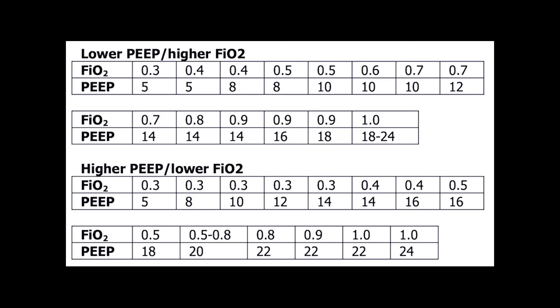If you look at the PEEP scale — which is very interesting and many people don't know about — if your FiO2 is high, your PEEP should also be high. If you have a very high FiO2 with no PEEP or a PEEP of five, you're actually not doing your patient the best. If you have a high FiO2, you should use a high PEEP — this is what drives oxygenation.